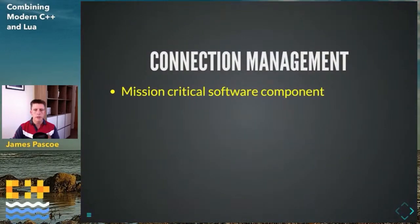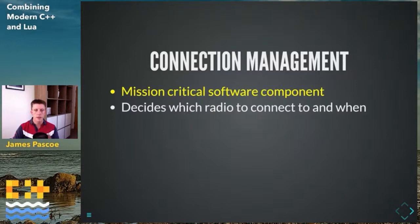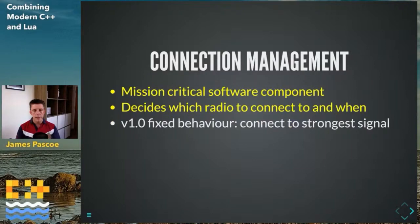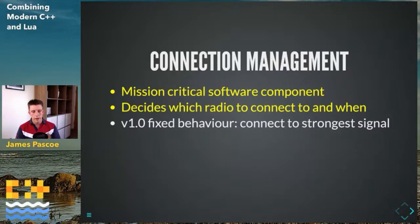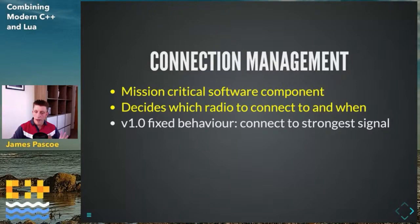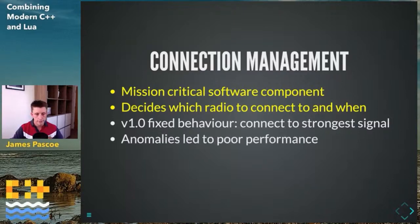Connection management is an absolutely mission-critical piece of software — without it the technology wouldn't work. The connection manager decides which radio to connect to on the track side and when, with potentially multiple radios in view at any one time. The first thing we implemented was a fixed behavior: simply connecting to the strongest signal. This was a placeholder to get something working quickly in a startup context. It was C++98, monolithic, not written by me, but well-written with very few bugs.